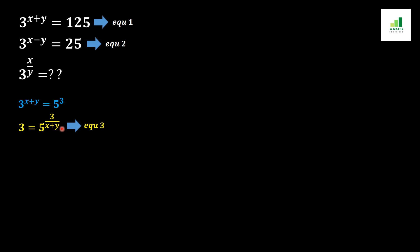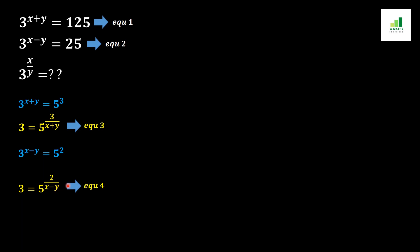Now we take equation number two and convert 25 into 5 squared. So equation two becomes 3 to the power x minus y equals 5 squared. Next, we multiply both sides in the power with 1 over x minus y. The x minus y cancels out on the left side, giving us 3 equals 5 to the power 2 over x minus y. This is equation number four.